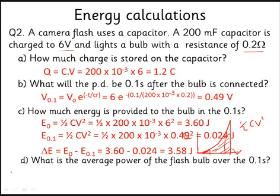We can get a flash with a power of 35.8 watts. That's much more than you could get out of a dry cell battery connected to a bulb.